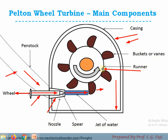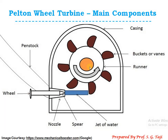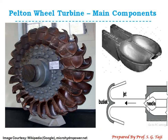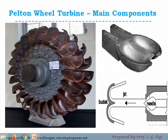The next component is the runner, over which all the buckets and vanes are mounted. The runner is the circular disc on which all the buckets are mounted with even spacing apart. This runner is coupled with the shaft at the center. Whenever the jet of water strikes on those buckets, the buckets get displaced, and as those buckets are mounted on the circular wheel (also called the runner), rotational energy is produced. This rotational energy is taken by the shaft and transmitted to the electrical generator where it is converted into electrical energy.